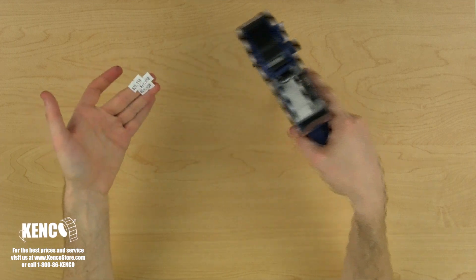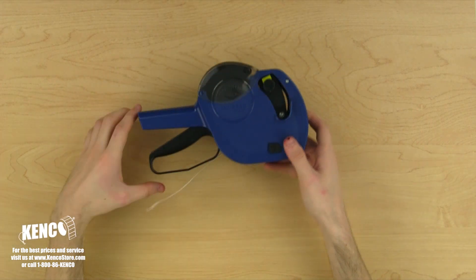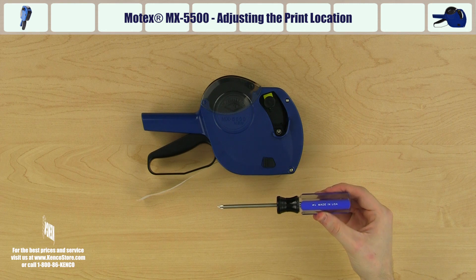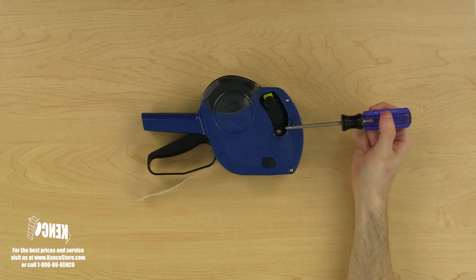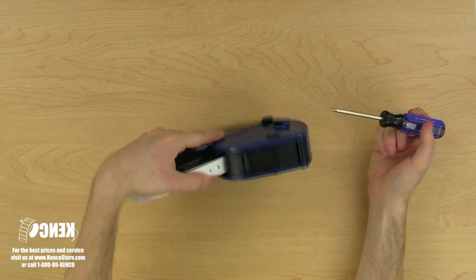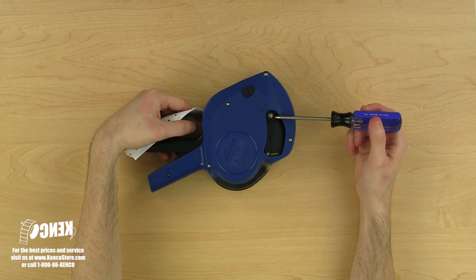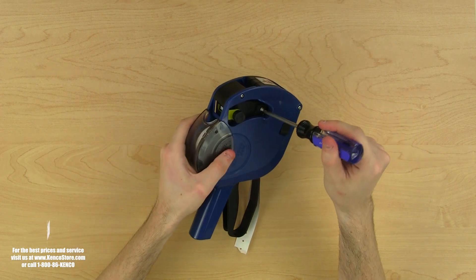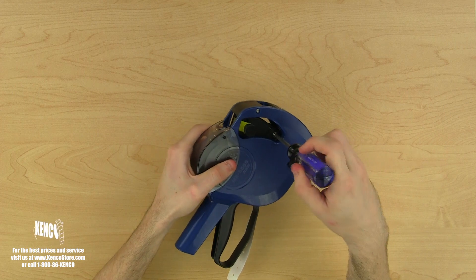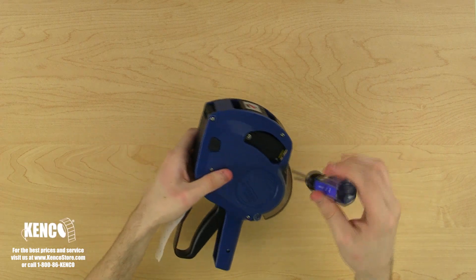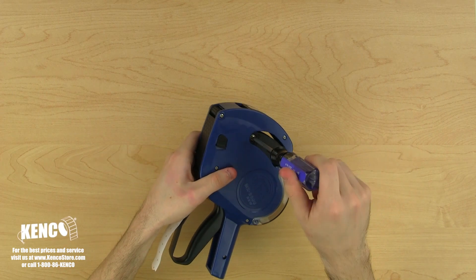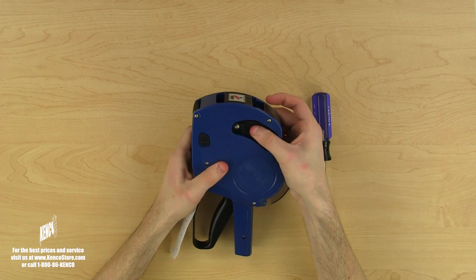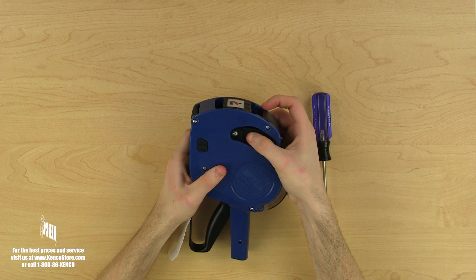Next, I'm going to show you how to adjust the print location. For this part of the tutorial, we are going to need a Phillips screwdriver size PH1. First, we will need to loosen up the two print head adjustment screws located on both sides of the print head. You only need half a turn in the counterclockwise direction to loosen up each screw. Once the screws are loose, we can slide the print head in the direction we need, either up or down, to adjust the vertical printing position.